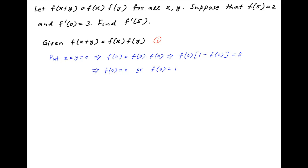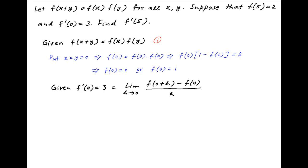Now we are given that f'(0) = 3. f'(0) can be written as the limit of [f(0+h) - f(0)] / h as h tends to 0. From equation 1, f(0+h) = f(0)·f(h), and therefore this limit is equal to the limit as h tends to 0 of f(0)·[f(h) - 1] / h.